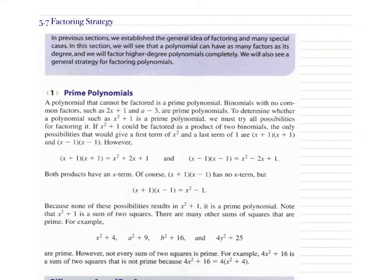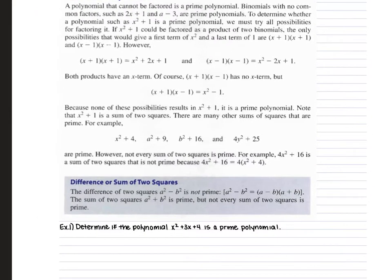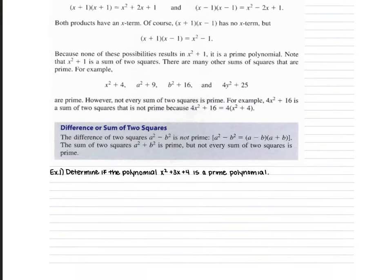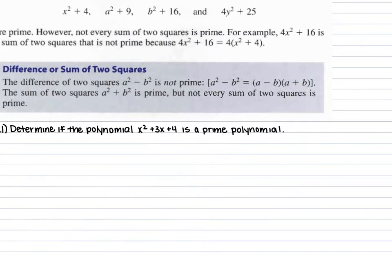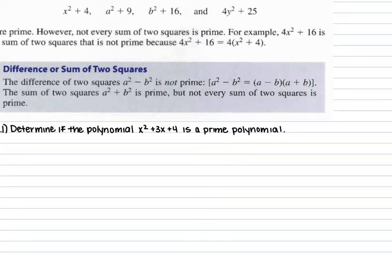Section 5.7 goes over different strategies in order to factor. When you are factoring, you want to first ask yourself if there is a greatest common factor that you can factor out. If there is, do that. From there, if you're left with a trinomial that has an A of 1, find the factors of your C term that add up to be your B term.